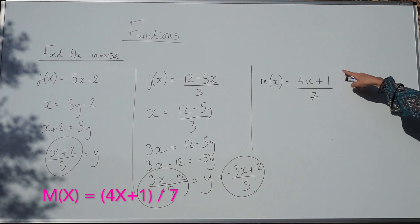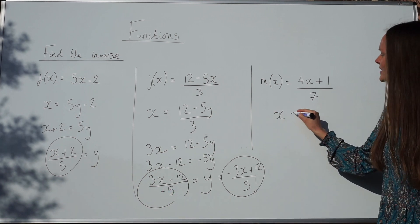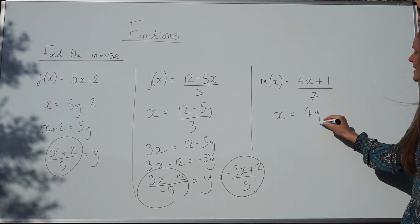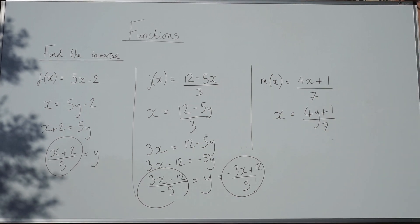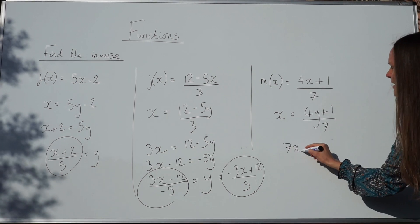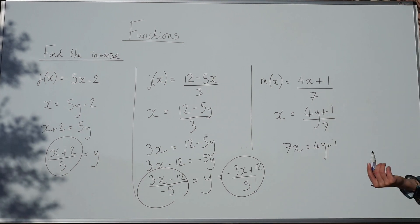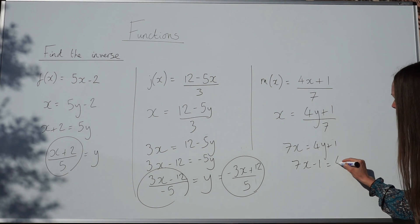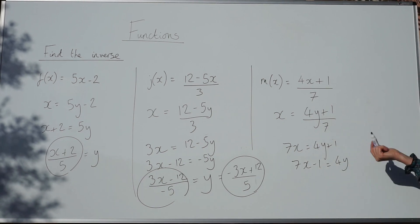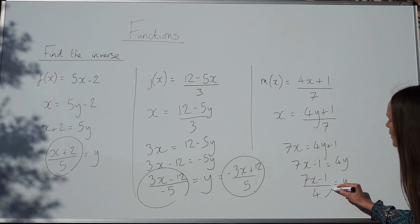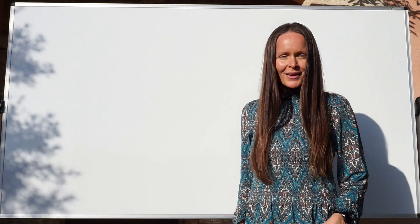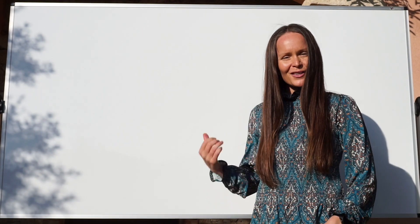For the last one, m of x equals 4x plus 1 divided by 7. Start by writing x equals, rewrite with y: x equals 4y plus 1 divided by 7. Multiply both sides by 7: 7x equals 4y plus 1. Take away 1 on both sides: 7x minus 1 equals 4y. Divide both sides by 4: y equals 7x minus 1 over 4. That's the inverse. I hope you found those examples on functions easy to understand — soon I'll have another video with functions in exam questions.